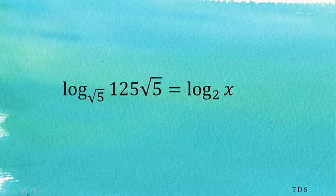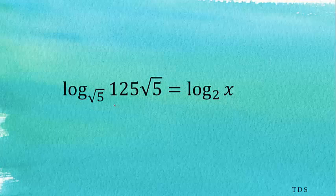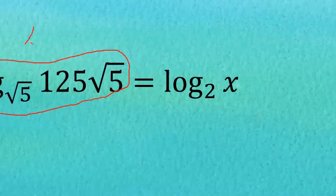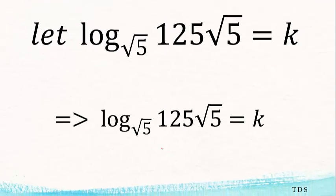That is the question we have: log of 125√5 to base 5. We are going to solve this question. First of all, let's represent this one by a variable. I'm going to let a variable represent log of 125√5 to base 5. Let's call it k, or any variable of your choice.